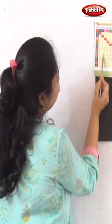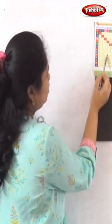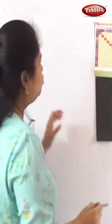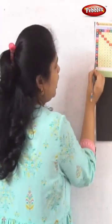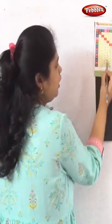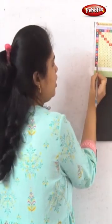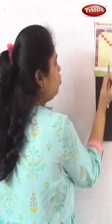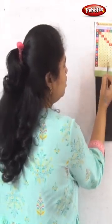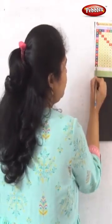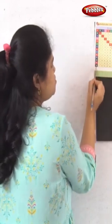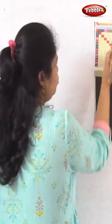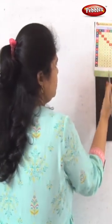3 into 8, 24. 3 into 9, 27. 3 into 10, 30. 3 into 11, 33. 3 into 12, 36.